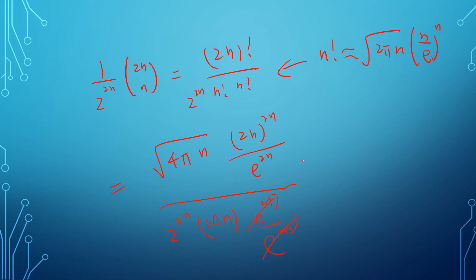Cancel, cancel. This cancels with this one. We have 2 to the 2n and n to the 2n divided by 2 to the 2n and square root of 4 pi n. So nicely cancelled, and this 2 cancels with 4.